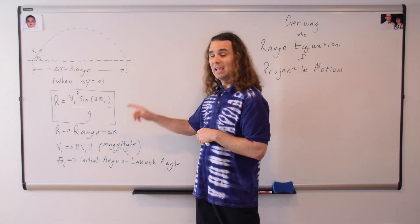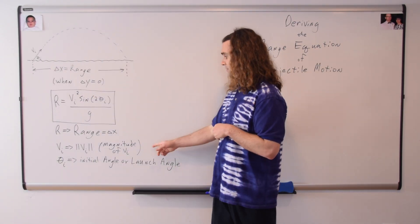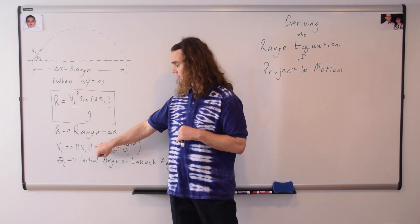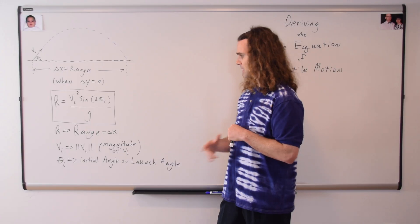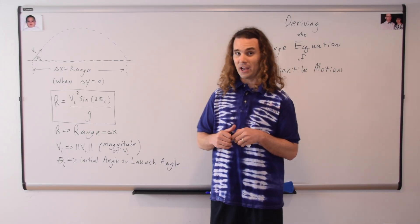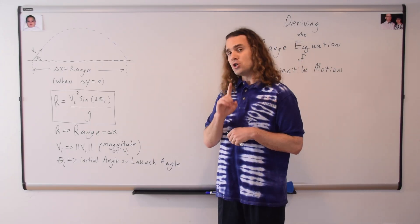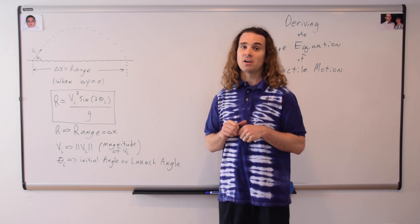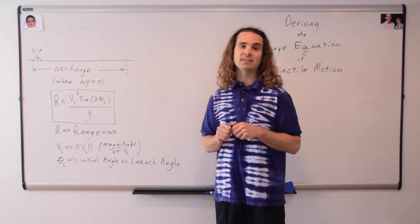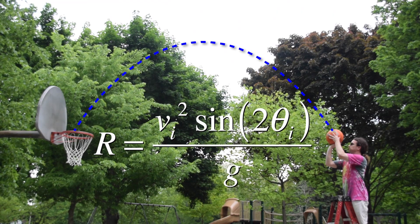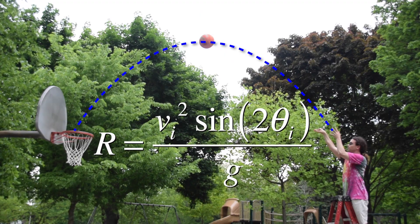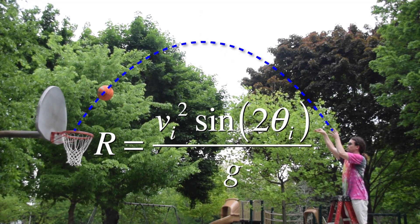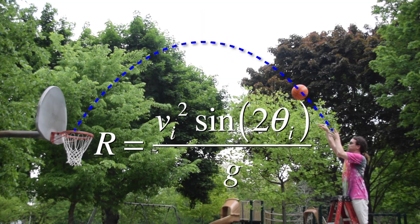Capital R is the range of the projectile. V sub i is actually the magnitude of the initial velocity vector. These double vertical lines mean the magnitude of the initial velocity. Theta sub i is the initial angle, or the launch angle of the projectile. And notice, because you have both the magnitude and the direction of the initial velocity vector, you do not have to resolve the initial velocity into its components to use the range equation. So the range equation should be read as: the range of a projectile equals the magnitude of the initial velocity squared times the sine of two times the launch angle, all divided by the acceleration due to gravity.